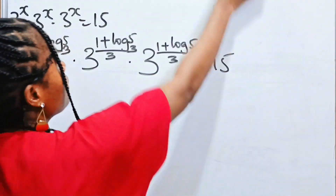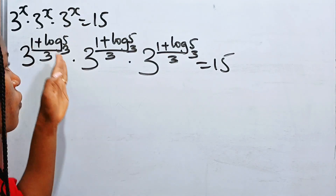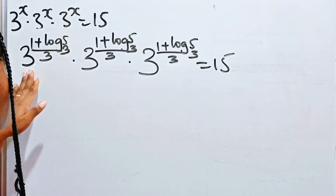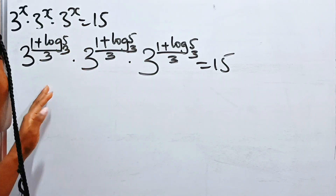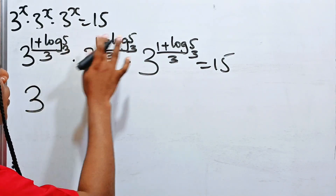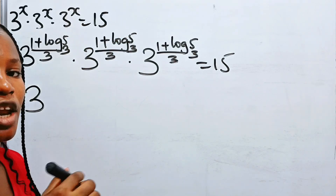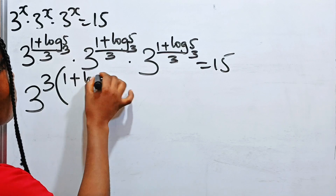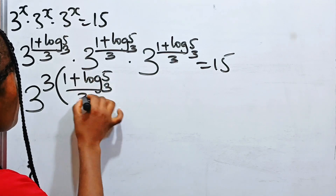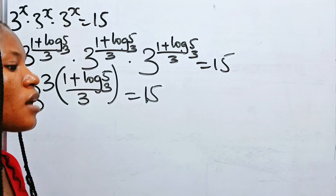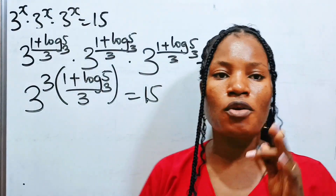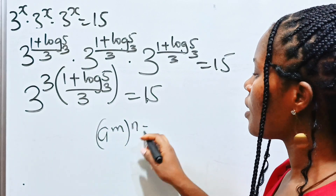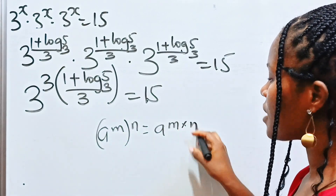Remember that a to the power of m multiplied by a to the power of n equals a to the power of m plus n. So this becomes 3 to the power of this plus this plus this, which is essentially 3 multiplied by (1 + log 5 base 3) divided by 3, equals 15. Also remember that a to the power of m raised to the power of n equals a to the power of m times n.